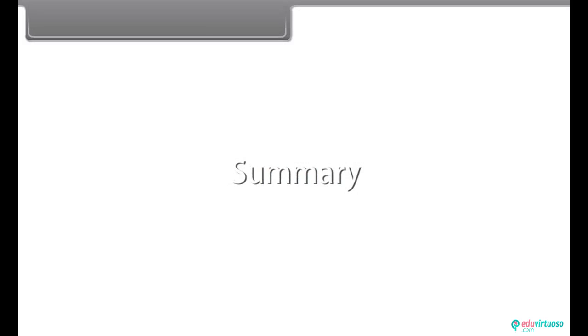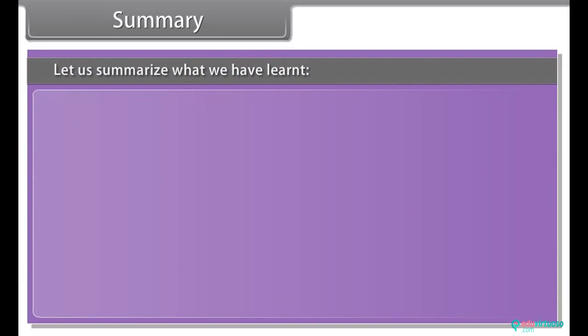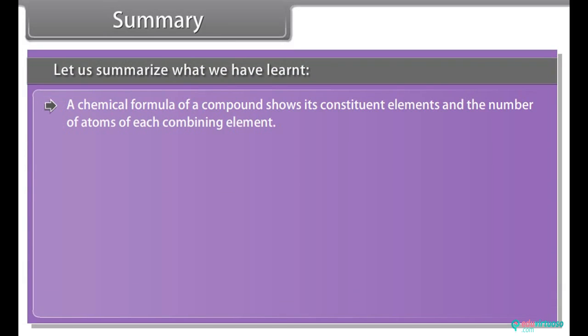Summary: Let us summarize what we have learned. A chemical formula of a compound shows its constituent elements and the number of atoms of each combining element.